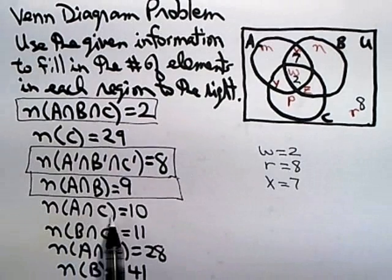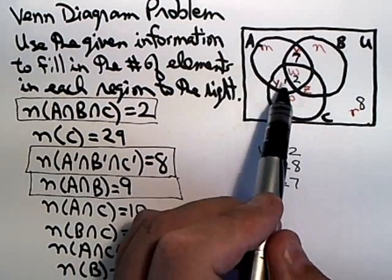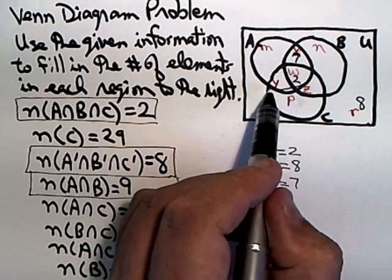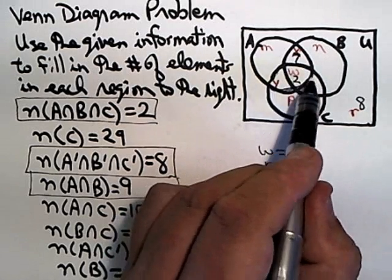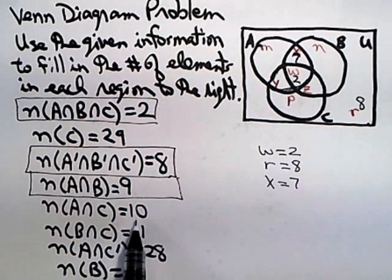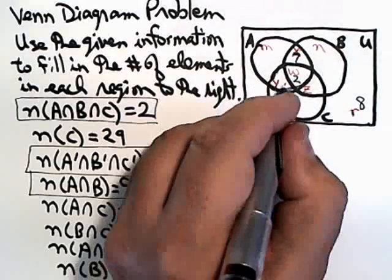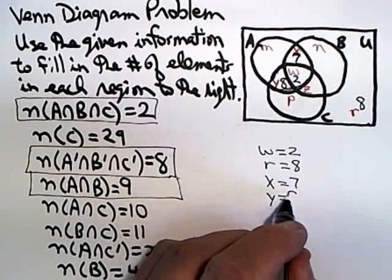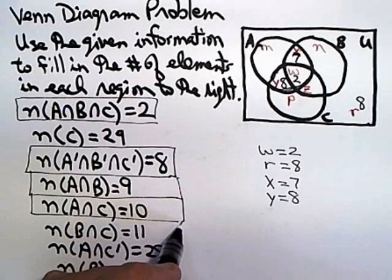Moving down, the overlap between A and C. A is here, C is here, so the overlap is this football-shaped region that includes Y and W right here. And that's supposed to be 10. You already have 2, so that means Y would be 8. So now I know that Y is 8, and I've used this piece of information.